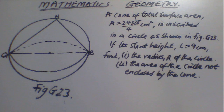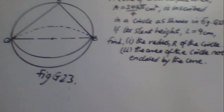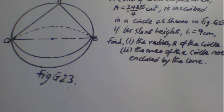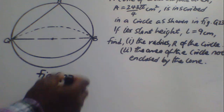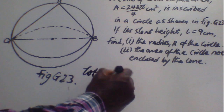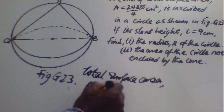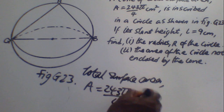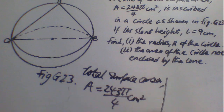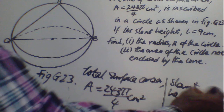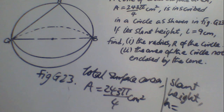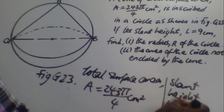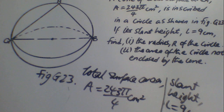Let's take it one at a time, beginning with finding the radius of the circle. We are given that the total surface area A equals 243π/4 cm², and the slant height L equals 9 cm. We have to find the radius of the circle and the area of the circle not enclosed by the cone.